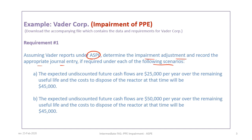The first scenario has expected undiscounted future cash flows of $25,000 per year over the remaining useful life, with a cost to dispose of the asset of $45,000. The second scenario is virtually identical except that the expected undiscounted future cash flows are $50,000 per year.